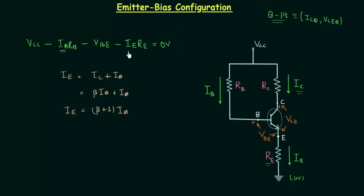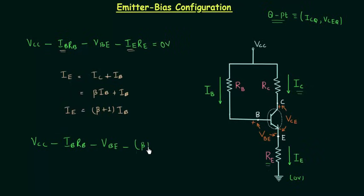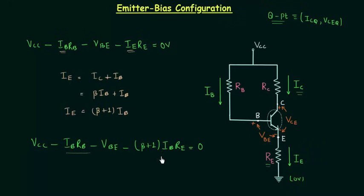We can replace IE by (β + 1)·IB so that we can calculate the base current IB. From this equation we have: VCC minus IB·RB minus VBE minus (β + 1)·IB·RE equals zero. Taking IB common from the relevant terms gives us the expression for IB.